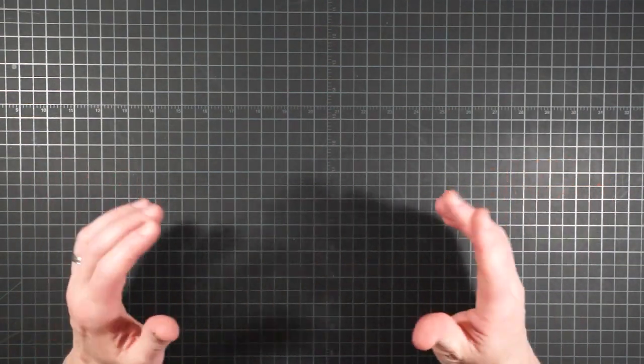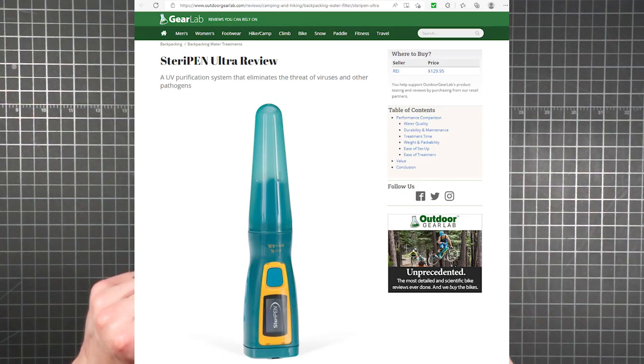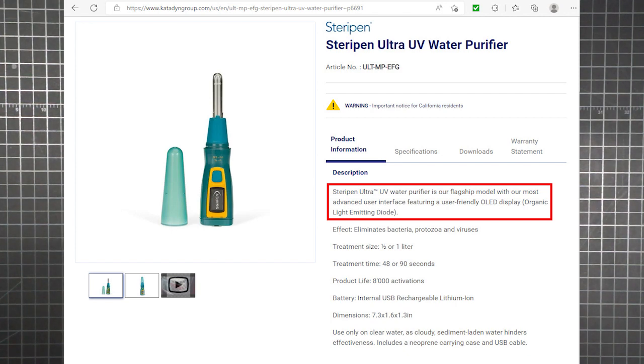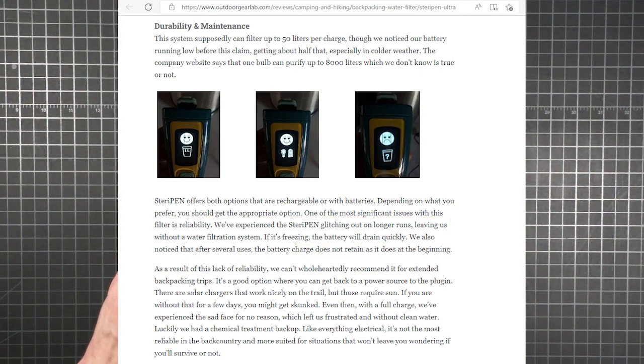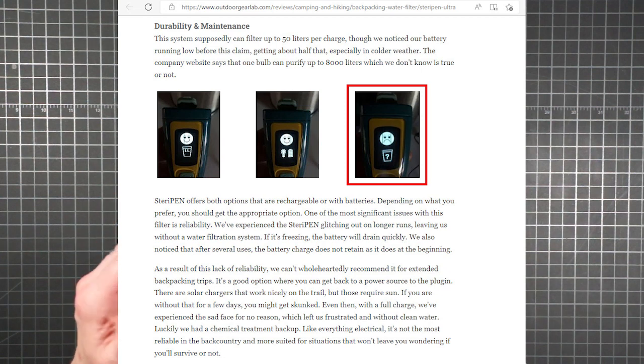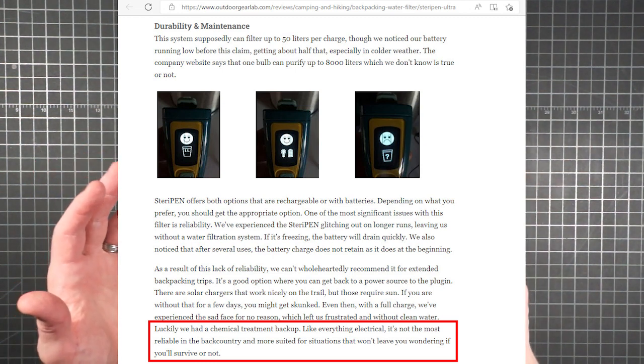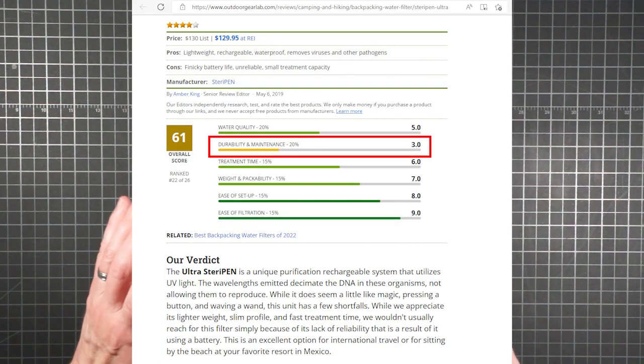First of all, it's an electronic gadget. You get with that the possibility of some of the usual idiosyncrasies that one might be familiar with. Outdoor Gear Lab did a review of the SteriPen Ultra. Katadyn calls it their flagship model with our most advanced user interface featuring a user-friendly OLED display. But Gear Lab experienced the SteriPen glitching out on longer runs, forcing them to resort to chemical treatment that they had fortunately brought as a backup. And regarding that most advanced user-friendly interface, even on a full battery charge, Gear Lab experienced the sad face icon indicating treatment failure for no reason. The review concluded, like everything electrical, it's not the most reliable in the backcountry.